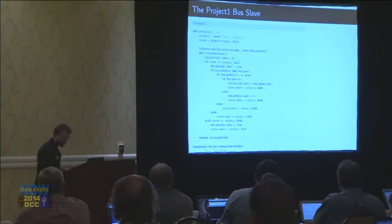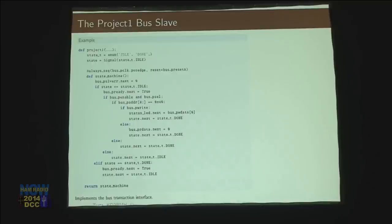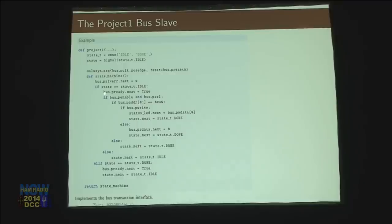This is some more detailed code — this is our real state machine that actually works with the APB3 bus. The state machine has two states: the idle state and the done state. When it's idle, it's just hanging out in the idle state. When it's done, it moves back to the idle state. So there are two parts of the transaction: I'm idle, I'm waiting, and then when I get accessed, I move to the done state to represent I'm done, and then I can move back to idle.